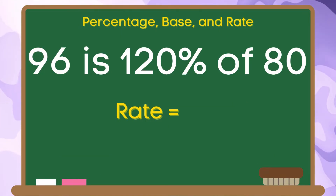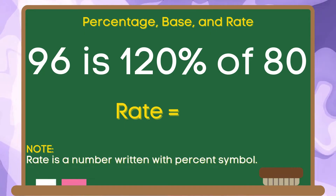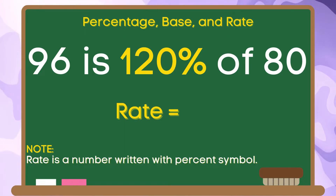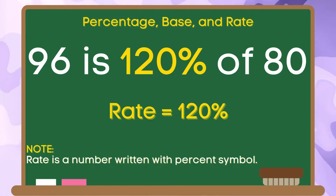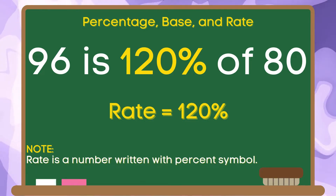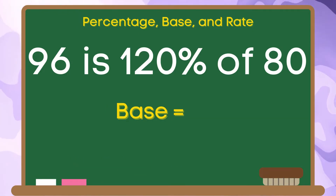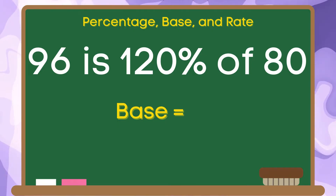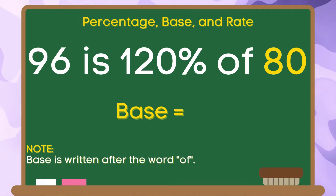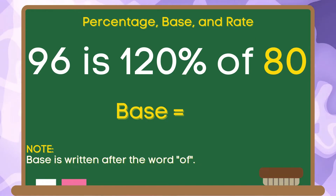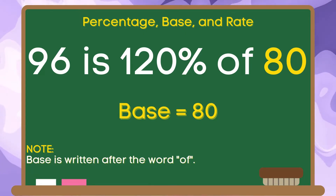Now let us identify the rate. Take note that rate is a number written with a percent symbol. In this example, 120 is written with a percent symbol, so the rate is 120%. Let us identify the base. Base is written after the word 'of.' In this example, 80 is written after the word 'of.' Therefore, the base in this given example is 80.